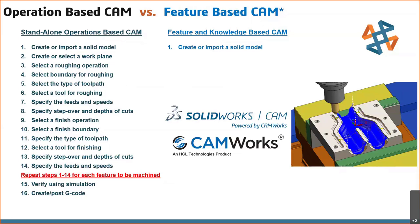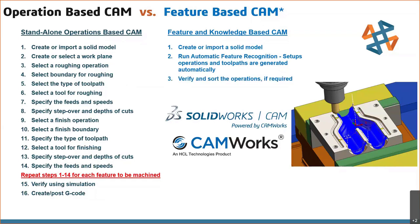Feature-based: you create or import a model into SOLIDWORKS, then you run automatic feature recognition. Setups, operations, and toolpaths are generated automatically based on the tools you have selected and your preferences for how you want to machine based on your standards. Then you verify and sort the operations if required — if you like the order of operations, you can leave it, drag and drop to move around, or right-click and do a sort, creating your own scheme. You can set facing, then drilling, then roughing, and create multiple schemes. Then verify using simulation and create your G-code.